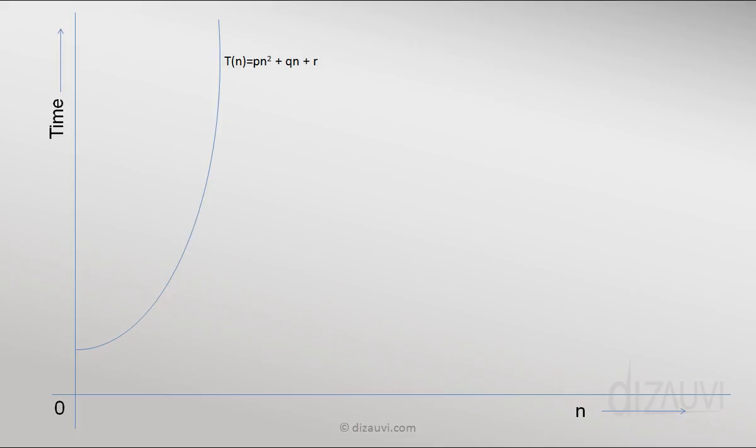And our job is to find the upper bound for this function T(n). Now consider a function c1·n², and here c1 is so chosen that this function never overtakes the function T(n).